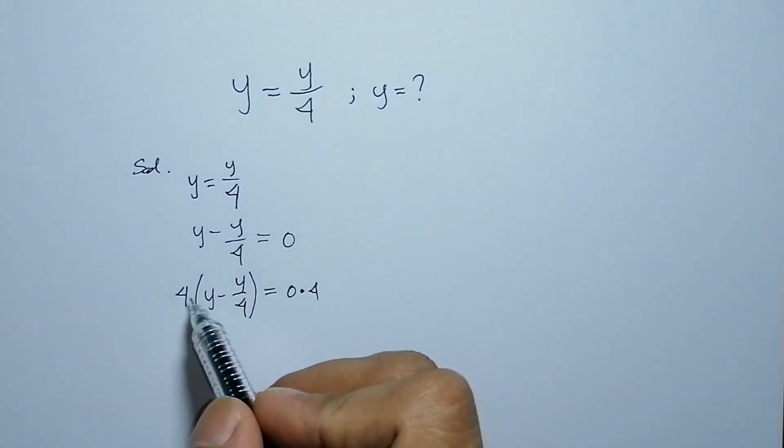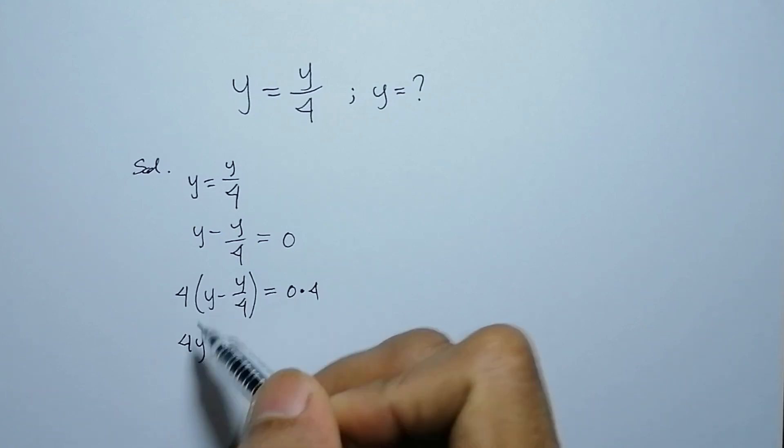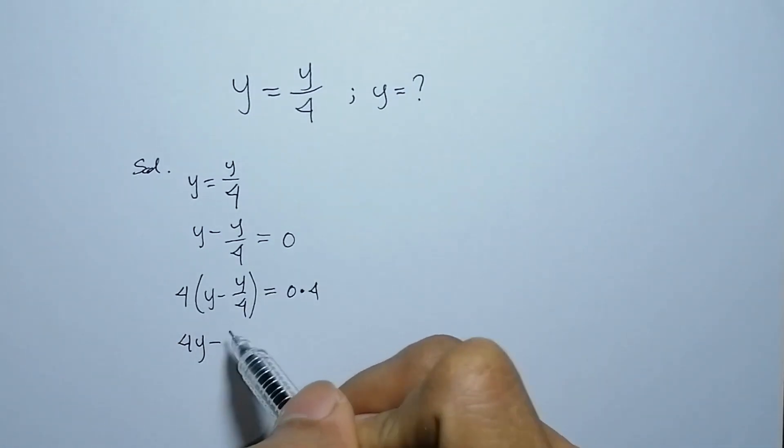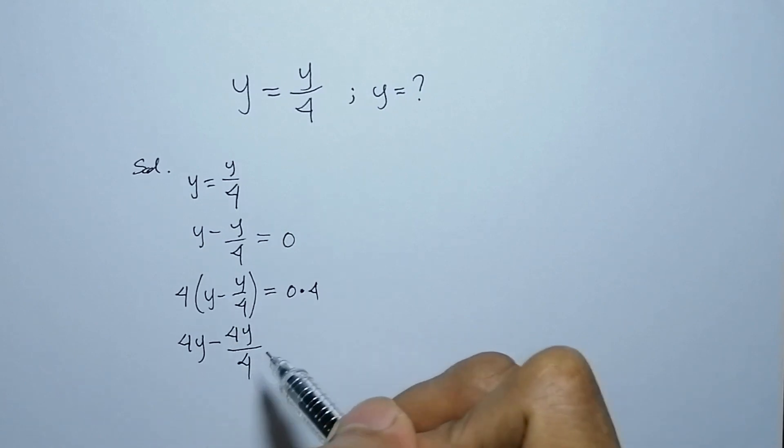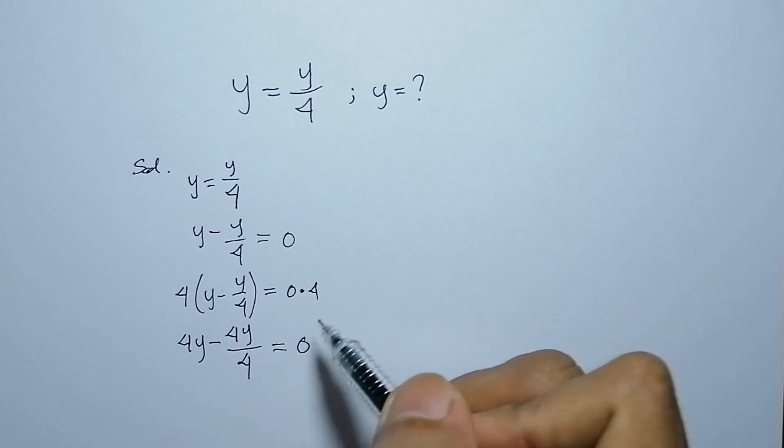By simplifying, this is 4y, 4 times y, negative 4y over 4 equals 0 times 4 is 0.